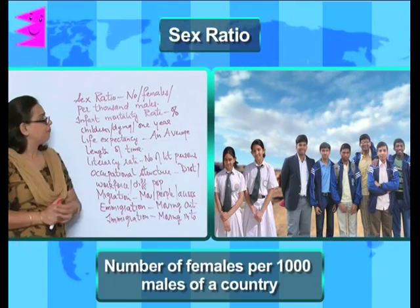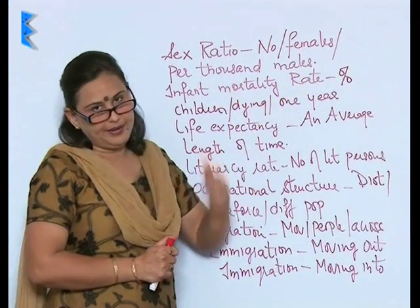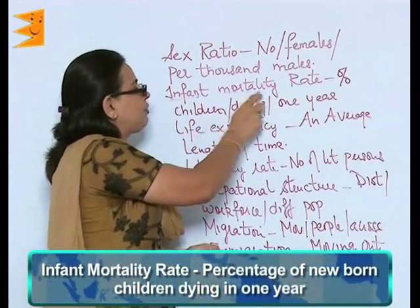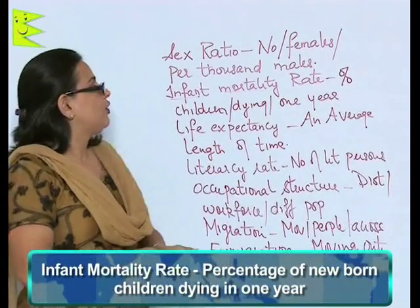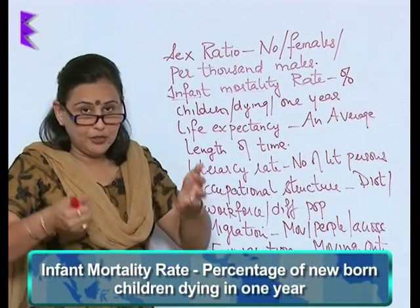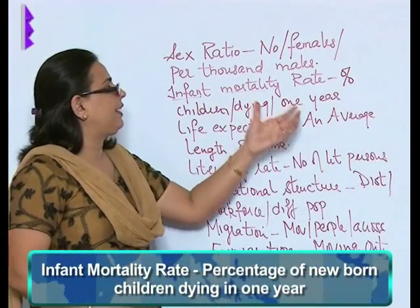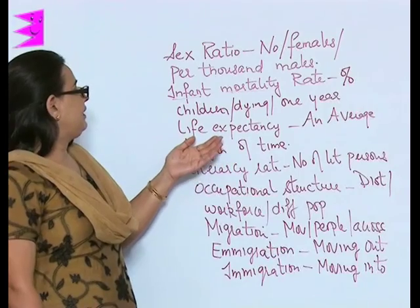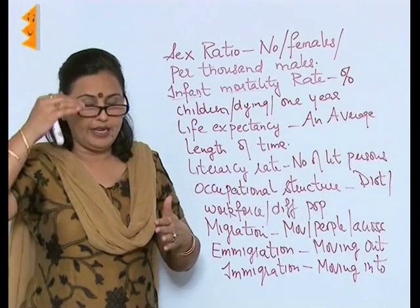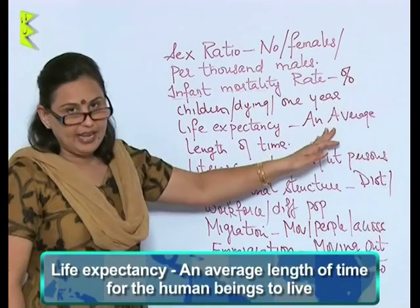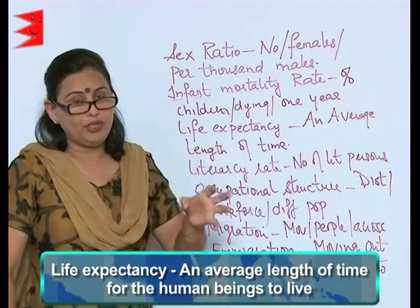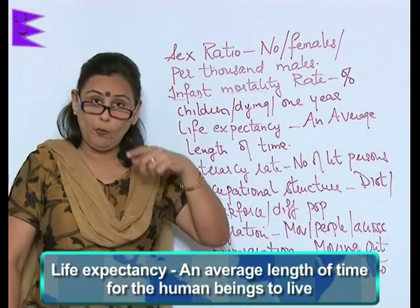Infant mortality rate — let's divide the word: infant means the newborn, and mortality comes from the word mortal, meaning death. So the percentage of newborn children dying in one year is the infant mortality rate. Next is life expectancy — how long is a person expected to live? That is the average length of time wherein human beings are actually supposed to live in a country, owing to various factors.